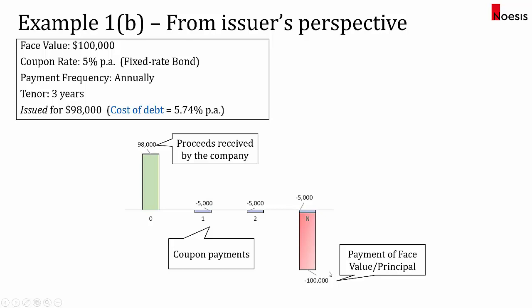Looking at Examples 1A and 1B, the cash flows are just from different perspectives. To the investor who paid for the bond, it's an asset — they get a return for buying the bond. For the issuer, they borrow money up front and then have to pay it back later. So to the investor, what is known as the yield to maturity is a return, but to the issuer, it's a cost.